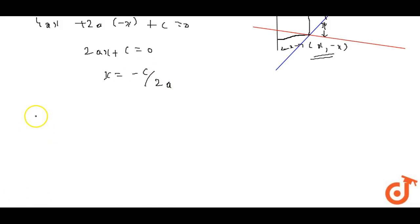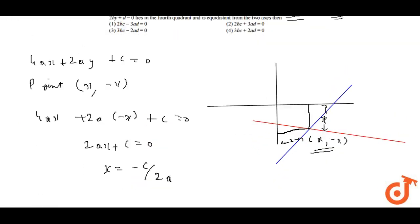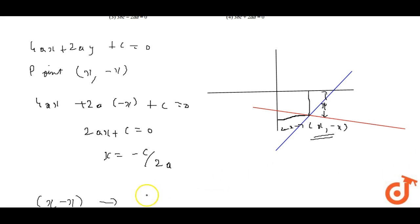And this point x comma minus x should be equal to the other equation. This equation is 5bx plus 2by plus d equals to 0.